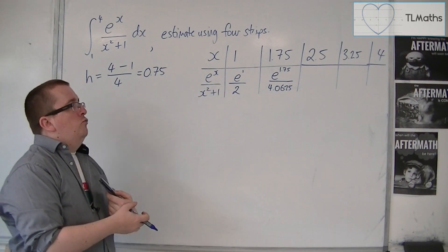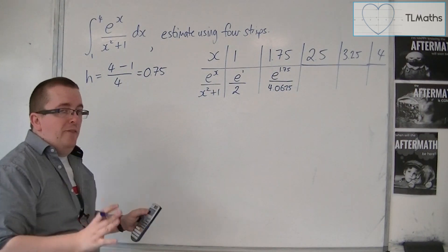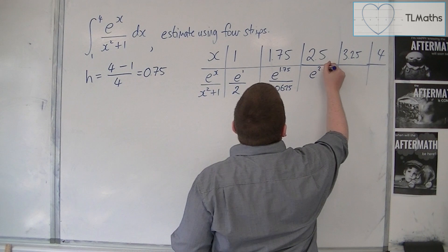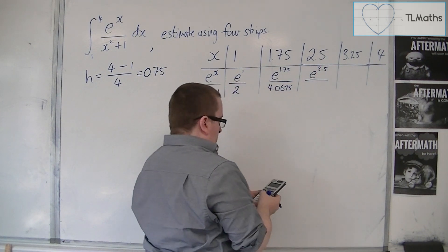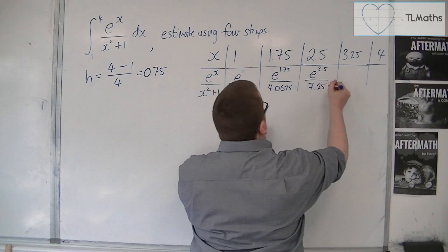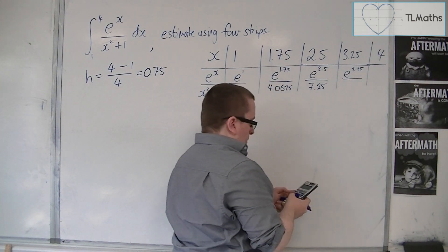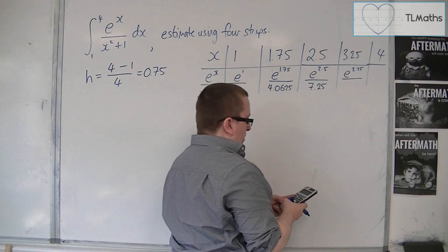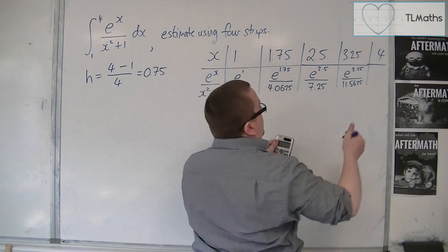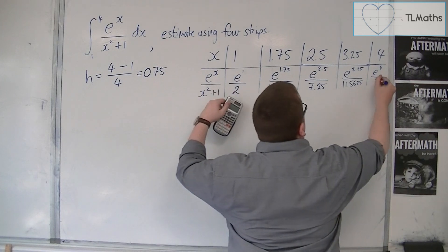Now you'll notice that I'm not writing out the full calculator display for each of these. I'm going to leave them fairly simplified, and then I can substitute them all into the formula. So for this, I'm going to have e to the 2.5 over 2.5 squared plus 1, which is 7.25. Then I've got e to the 3.25 over 3.25 squared plus 1, which is 11.5625. And then finally, e to the 4 over 4 squared plus 1, so 17.